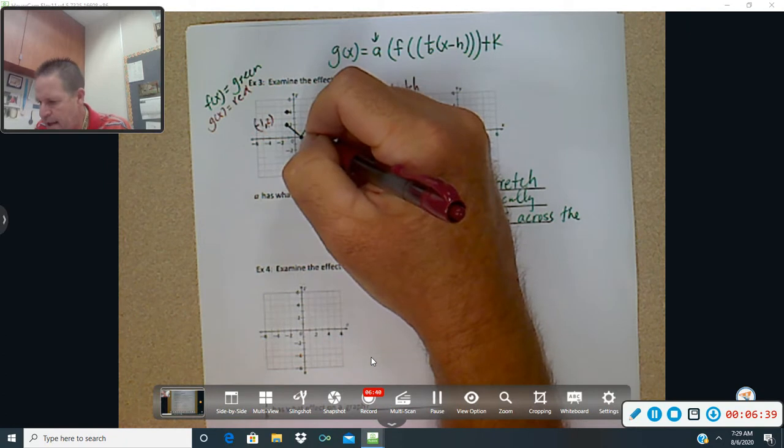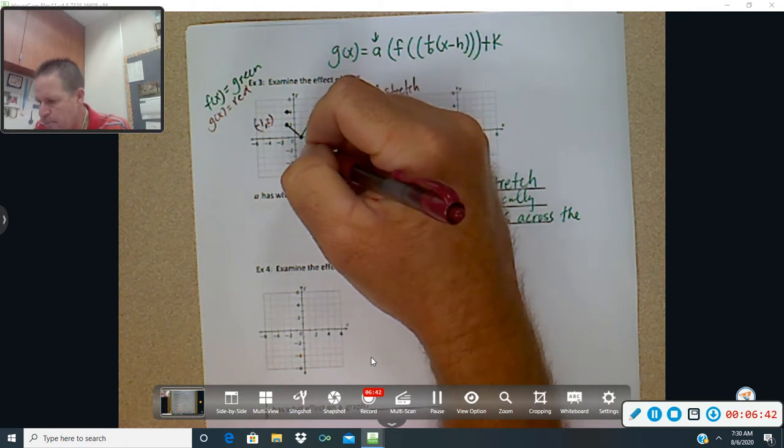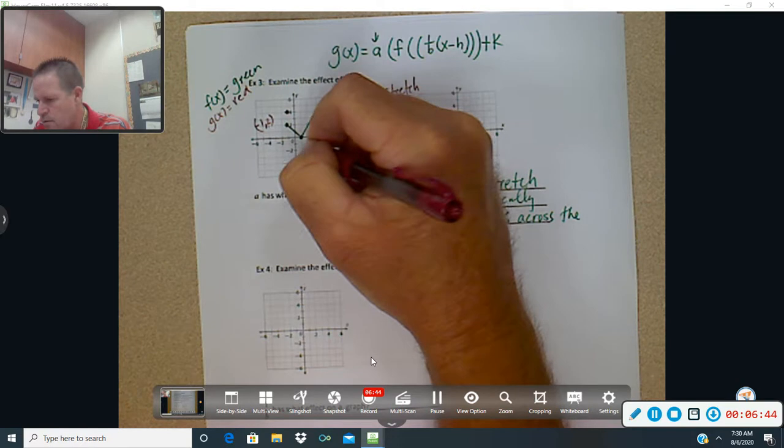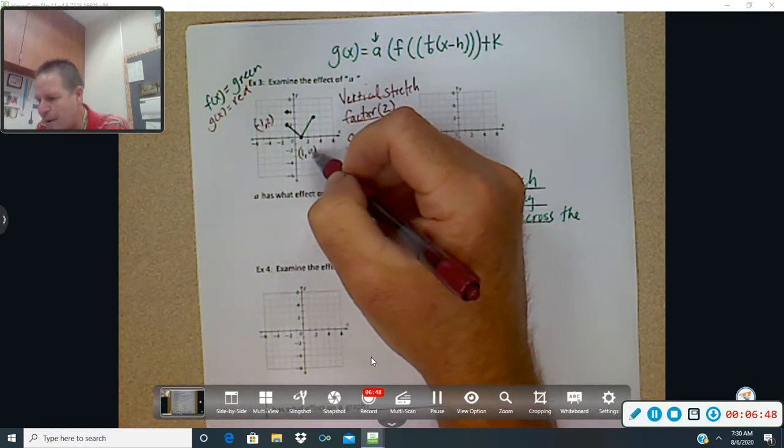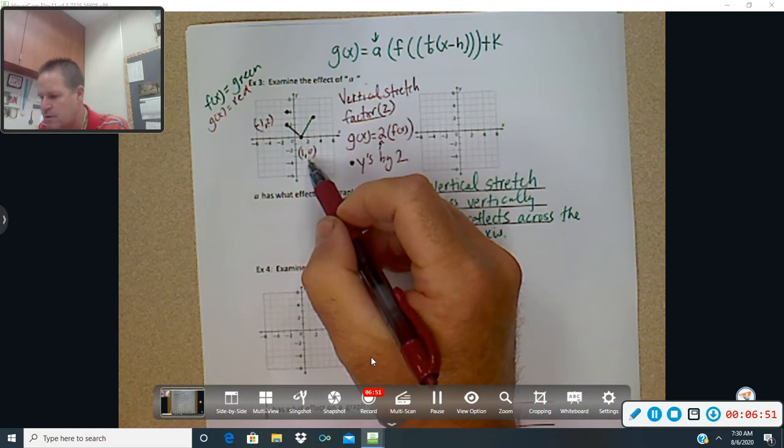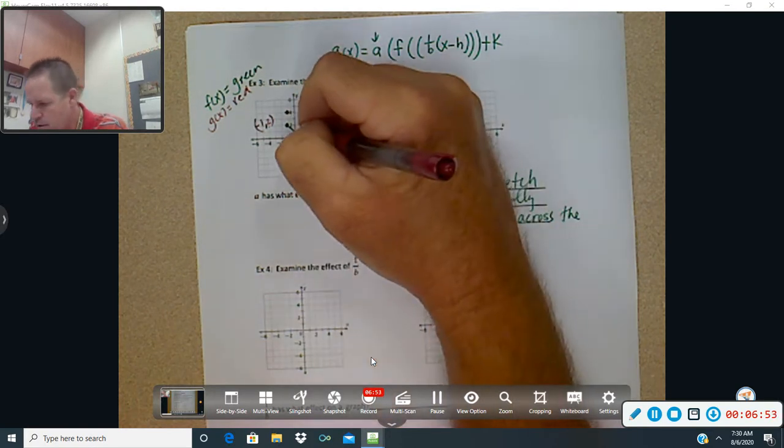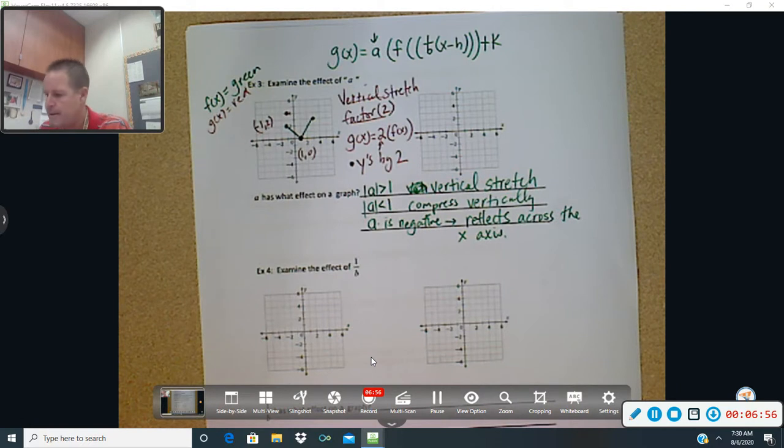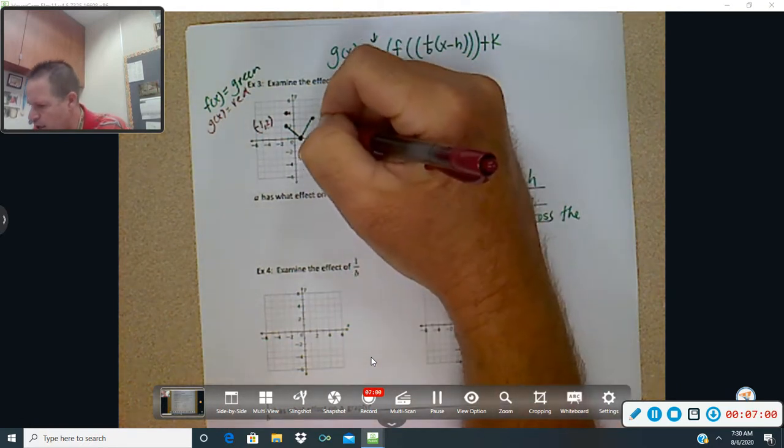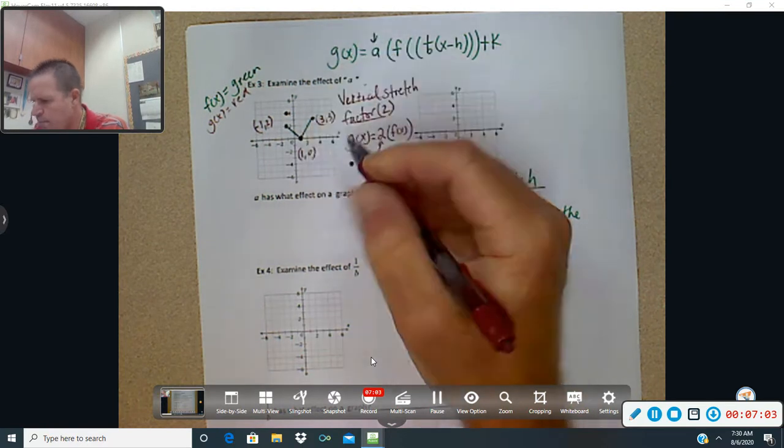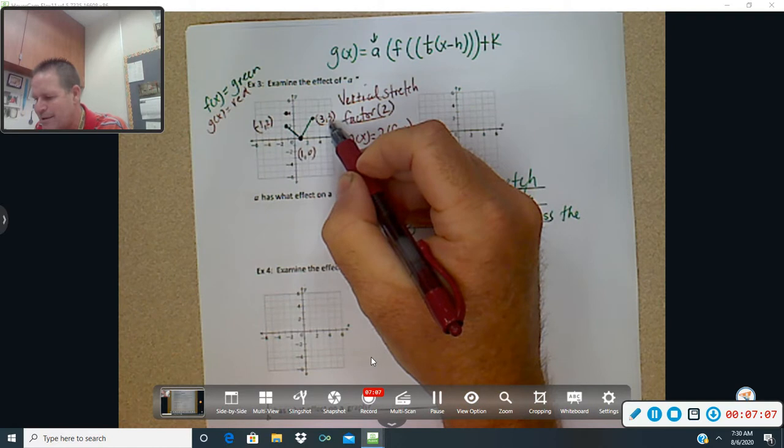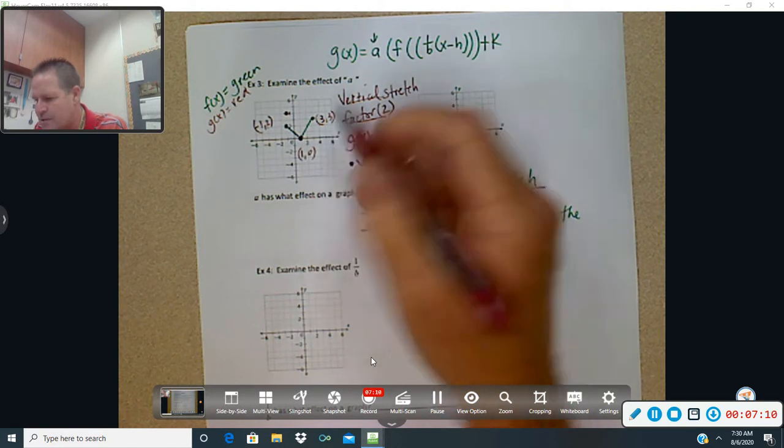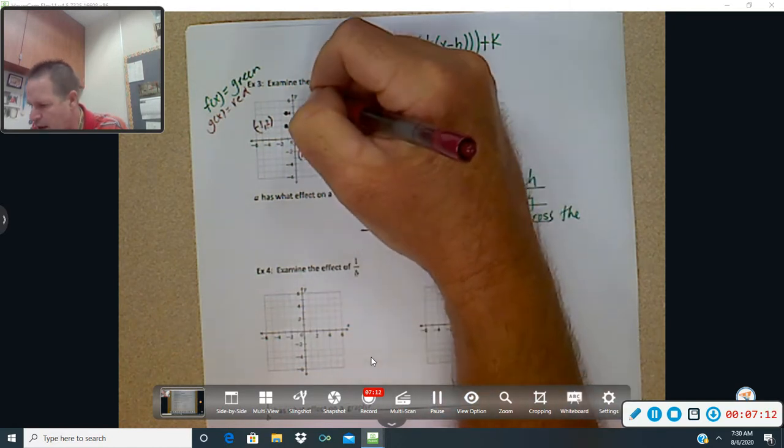Now, this point here that I'm looking at is the point 1 comma 0. So if I multiply the y's by 2, 0 times 2 is still 0. That one's going to stay there. OK, now, your final point, this one here, is 3 comma 3. And we're going to multiply the y by 2. So what's that going to be? 3 times 2 is 6. So we're going to be at 3 comma 6.